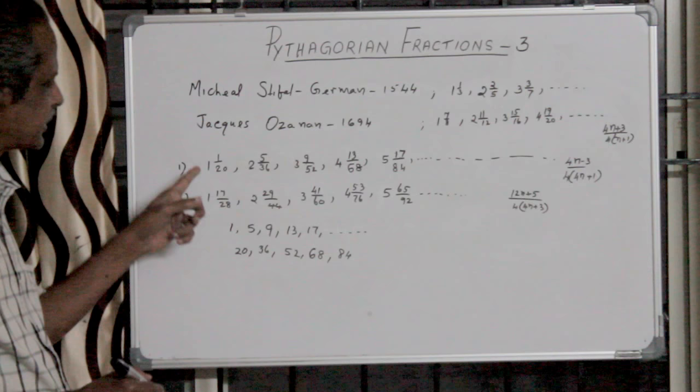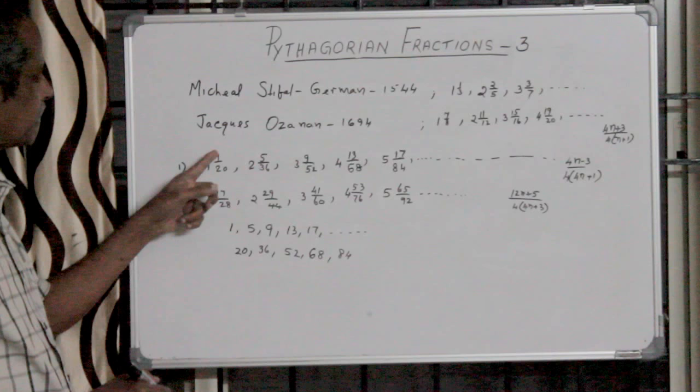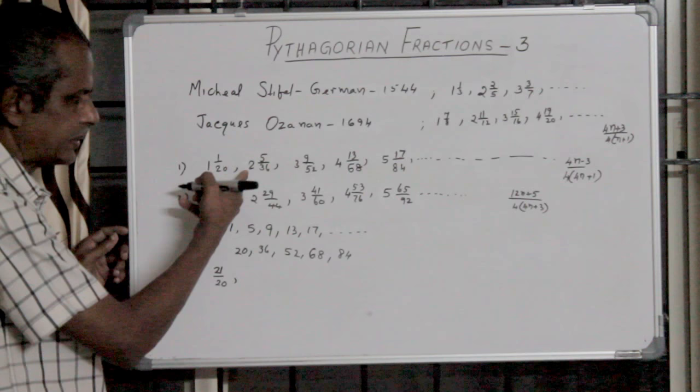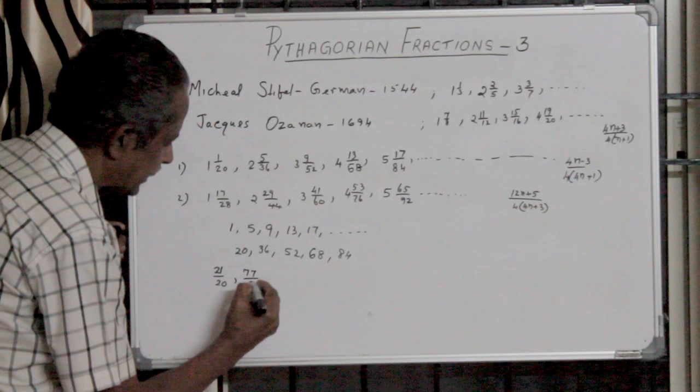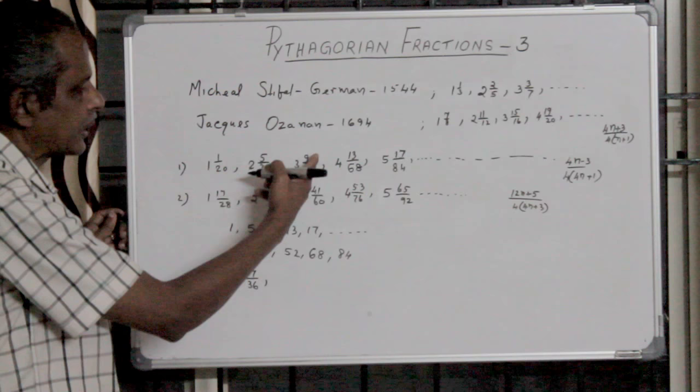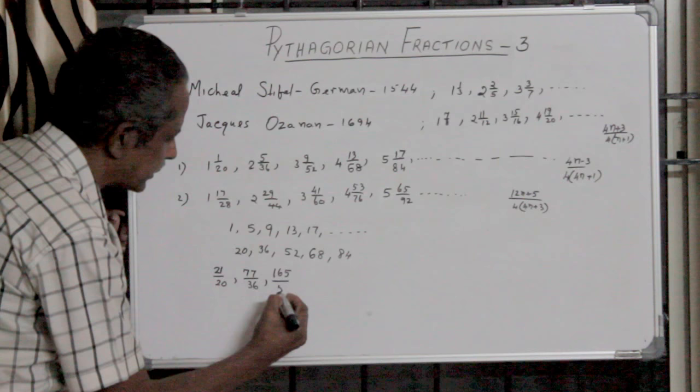These fractions you can convert into improper fractions to get Pythagorean triples. One example: 20 into 1 is 20, plus 1 is 21 by 20. 36 into 2 is 72, 72 plus 5 is 77 by 36. Here 52 into 3 is 156, 156 plus 9 is 165 by 52, etc.